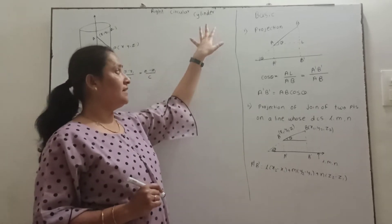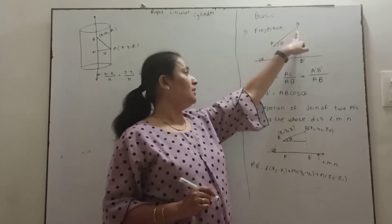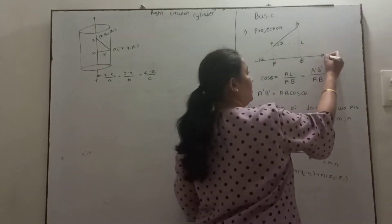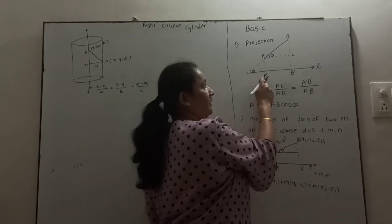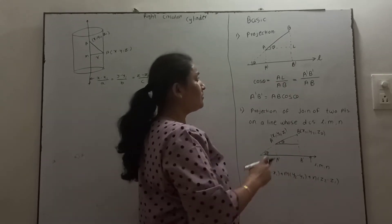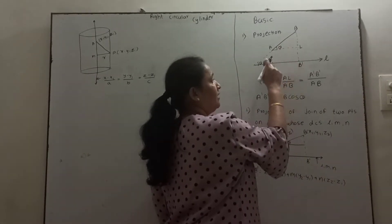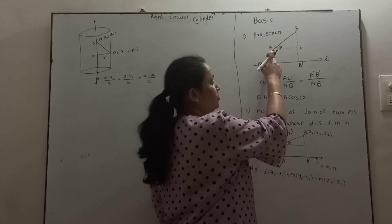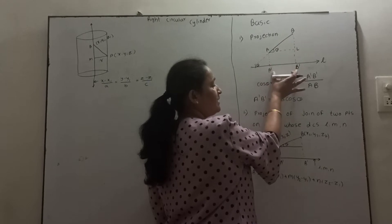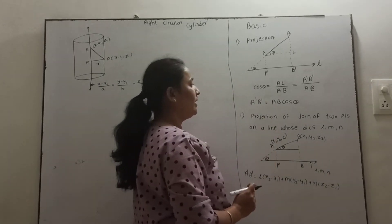For this we require the basics. First one is projection — length of projection. If we have two points A and B and want to find the projection of line AB on line L, we drop the perpendicular from points A and B to get A' and B'. A'B' will be the length of projection. If we assume AB is inclined at angle theta, these two lines are parallel, so by the definition of cos theta: cos theta equals AL upon AB, and AL is the same as A'B'. Therefore A'B' equals AB cos theta. This is the length of projection.